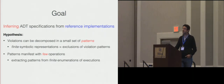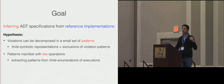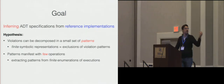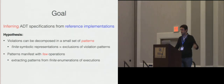The first hypothesis is that the violations of each ADT can be decomposed into a finite set of representative patterns, and the second is that these patterns will manifest with few operations. The first hypothesis will allow us to get a finite symbolic representation of an abstract data type defined as an exclusion of these violation patterns, which form a finite and small set in general. The second will allow us to extract them from finite enumerations of executions over this reference implementation.